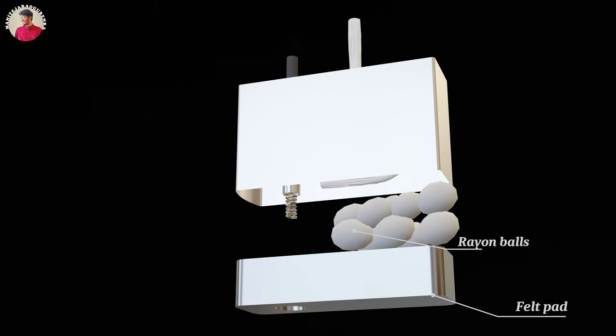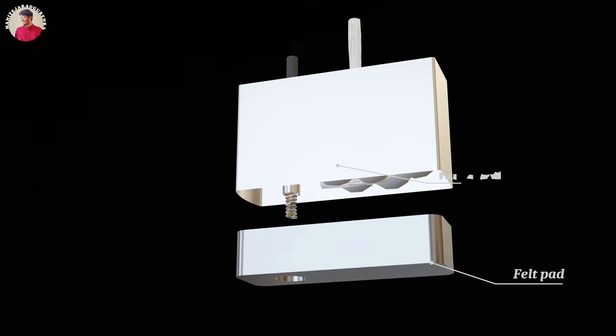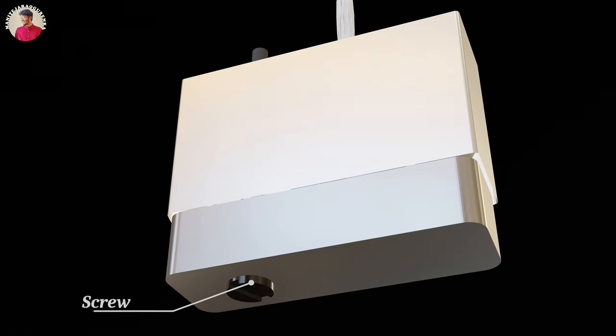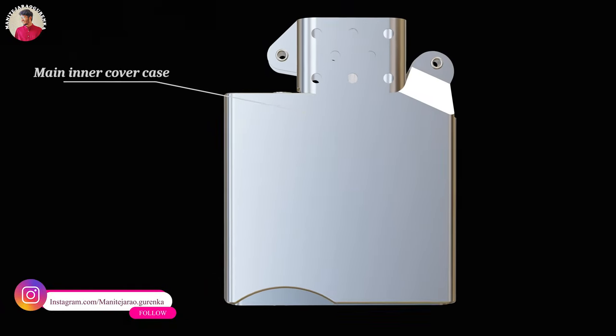Rayon or cotton balls are inserted into the inner case, right below the spring. A screw is fixed tightly to make the spring slightly compressed, and a main cover case is strongly installed by enclosing the inner case and the felt pad.